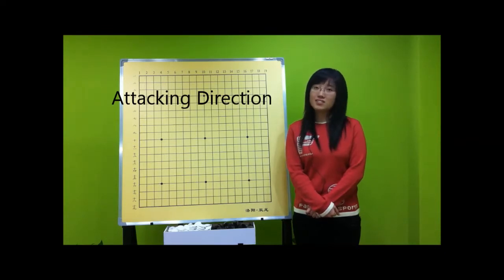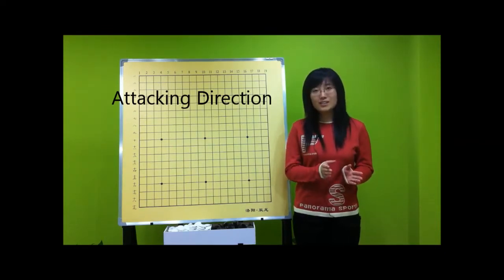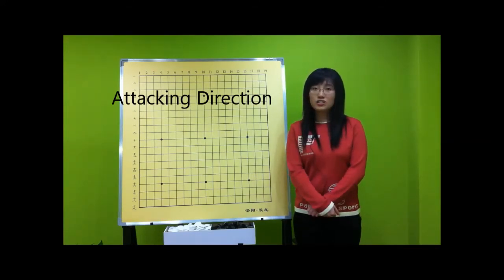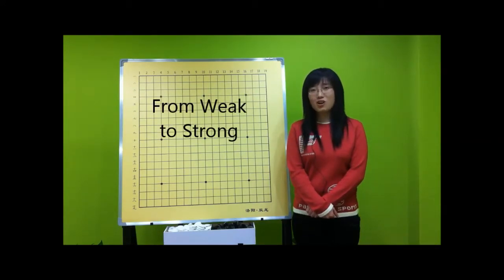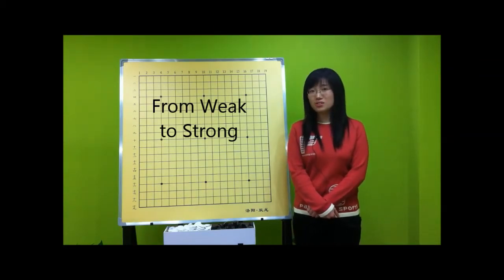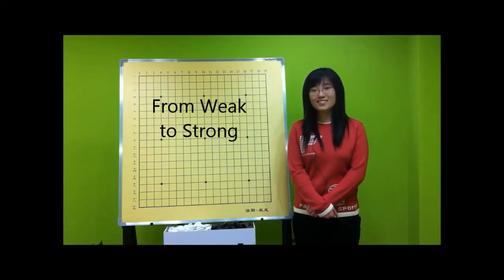The first method is called attacking from our weak place to our strong place — in short, from weak to strong. What does it mean? Let's go through some examples from easy ones to difficult ones.